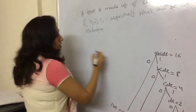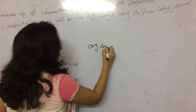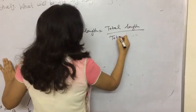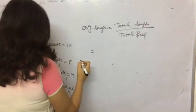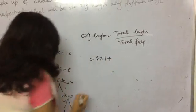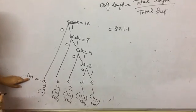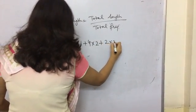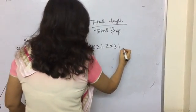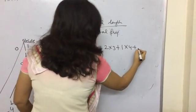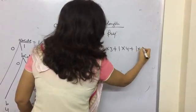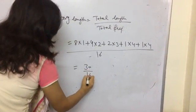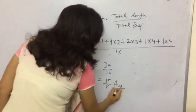So now we have to calculate the average length. Average length equals total length divided by total frequency. Total length can be calculated by multiplying each character's frequency by its number of bits: A is 8×1, B is 4×2, C is 2×3, D is 1×4, and E is 1×4. That gives us 8 + 8 + 6 + 4 + 4 = 30, divided by 16. So that would be 30/16, which is 15/8. That is the average length according to Huffman coding technique.